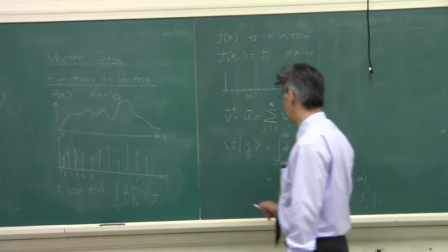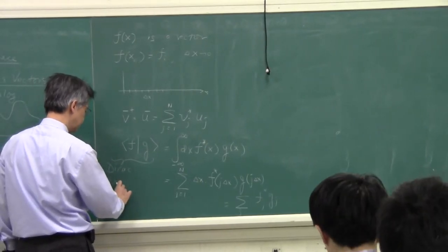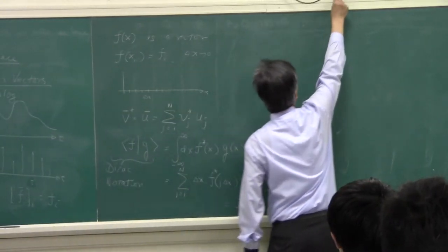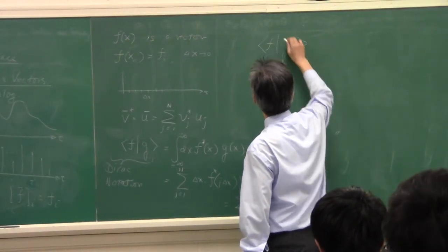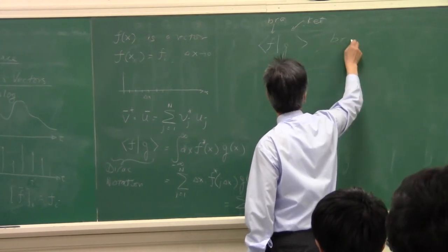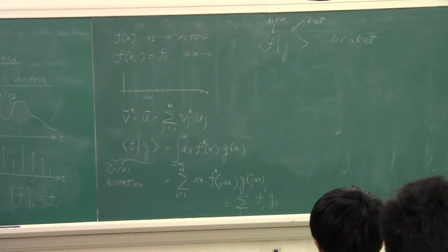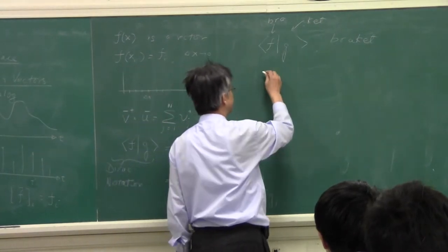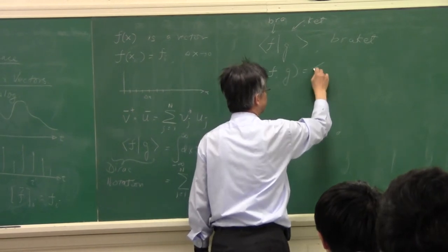This is called the Dirac notation, because Dirac loved to use it for inner product. This is called the bra, and this is called the ket — also called the bracket notation. Dirac loves to use this to represent inner product, but in mathematics literature, inner product is also written with angle brackets or with parentheses, and all of them mean the same thing.